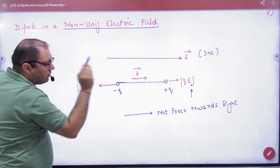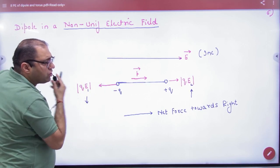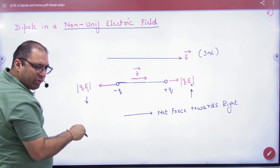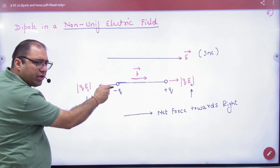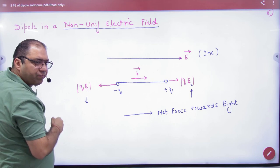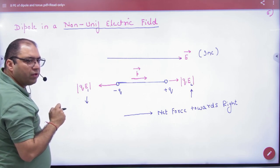Dipole is minus Q plus Q. Positive charge electric field force experience QE. Minus charge opposite QE. But E is not equal. Because it's increased.